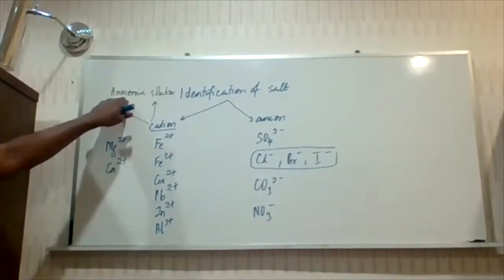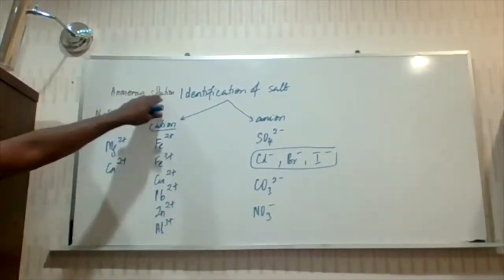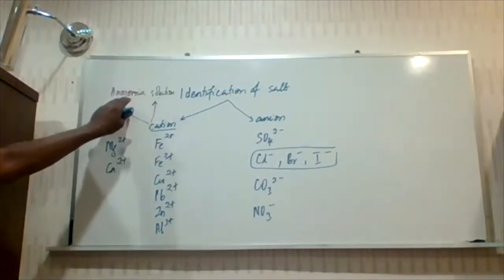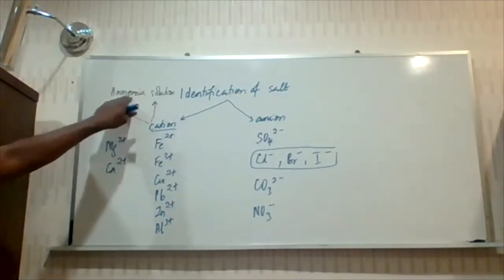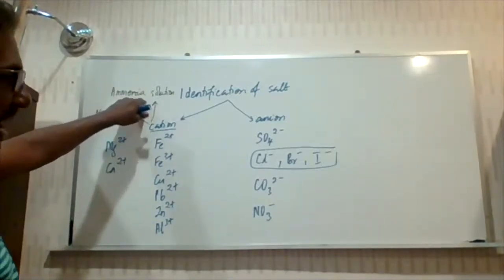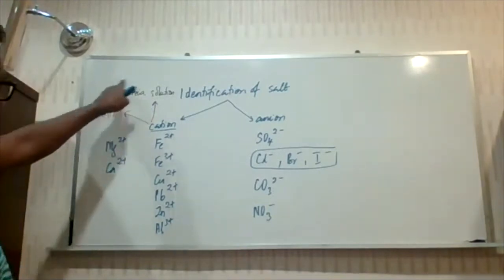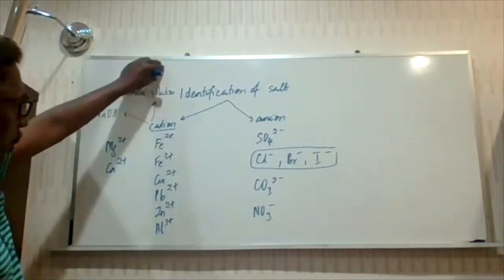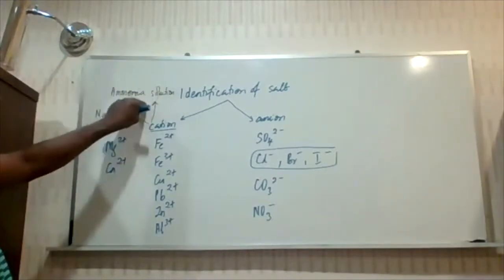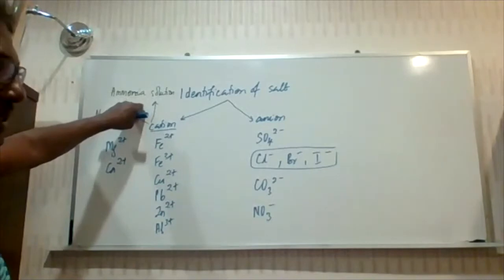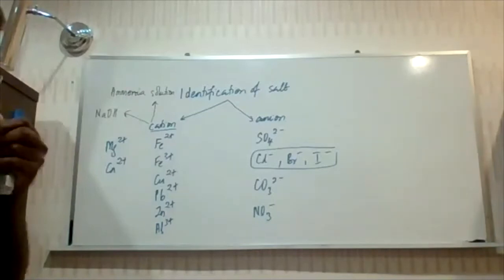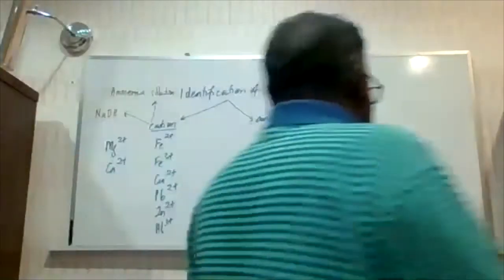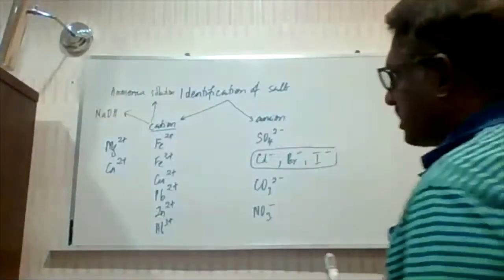Ammonia is a weak base and will not undergo complete ionization. So in solution form, most of its particles will be NH₃ ammonia. That's why it's called ammonia solution and not ammonium hydroxide. In solution, it exists as ammonium ions and OH⁻ ions, plus abundantly many ammonia molecules.